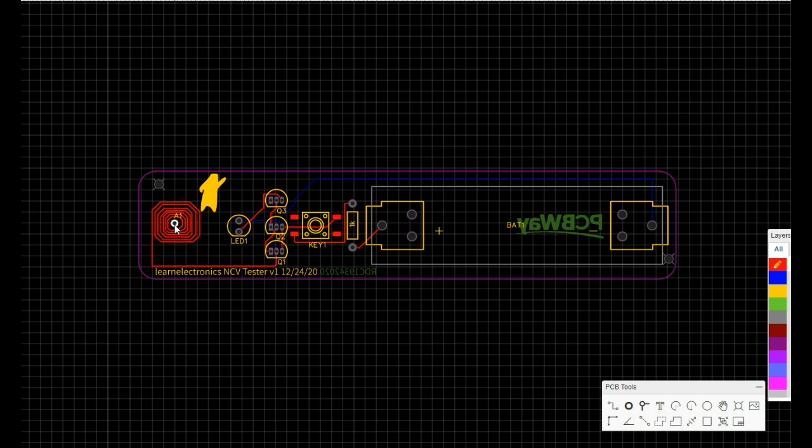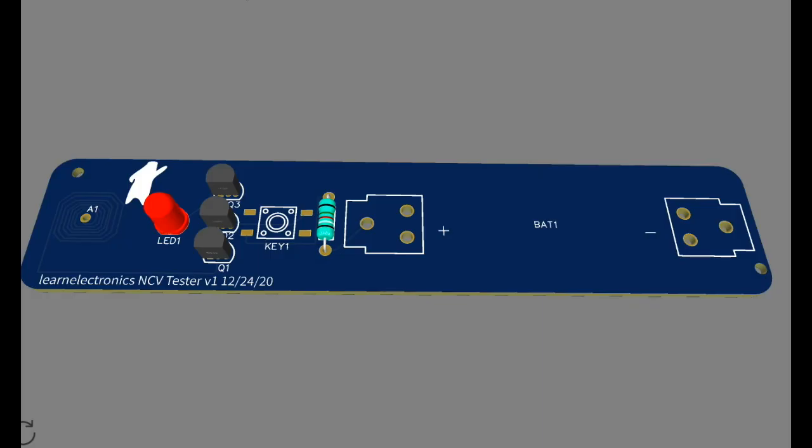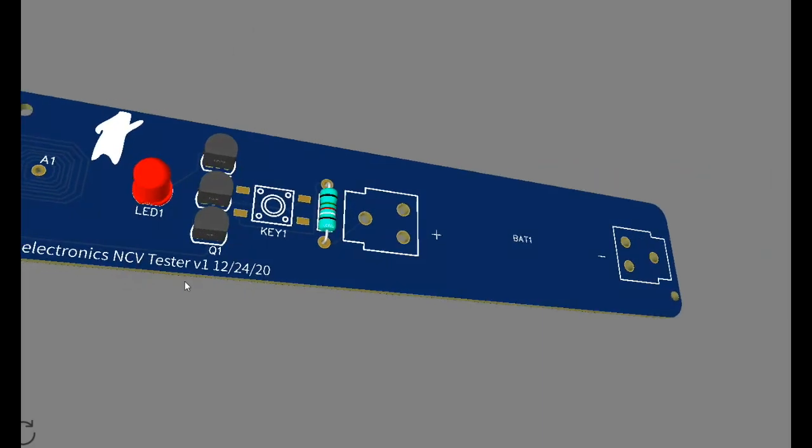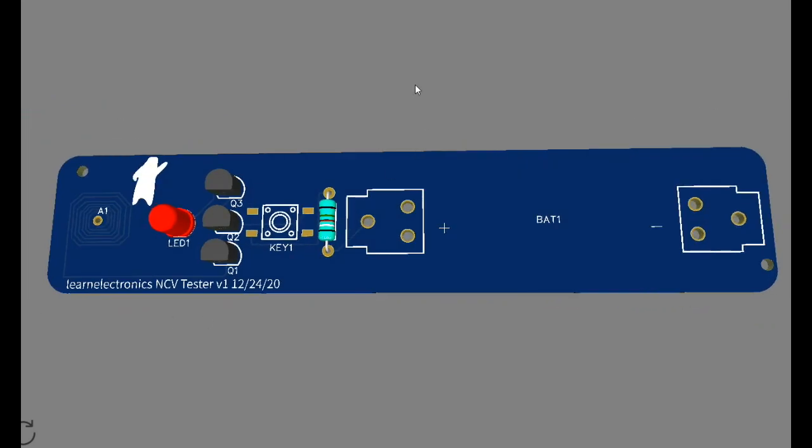So I basically just created a hole, called it an antenna, and then when I routed this I ran that trace through here and just made a bunch of loops and should be enough. All right, I'll get these ordered and through the magic of the internet, they'll be here in a second.